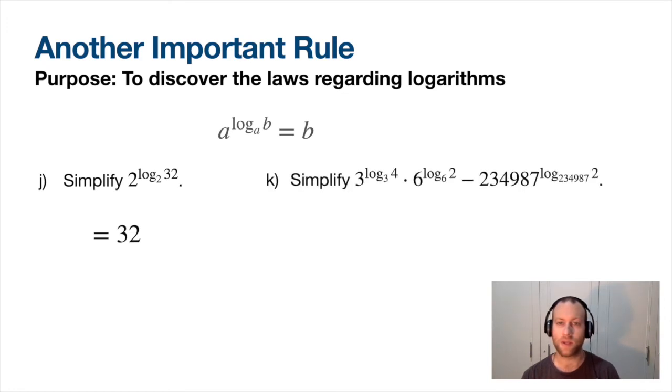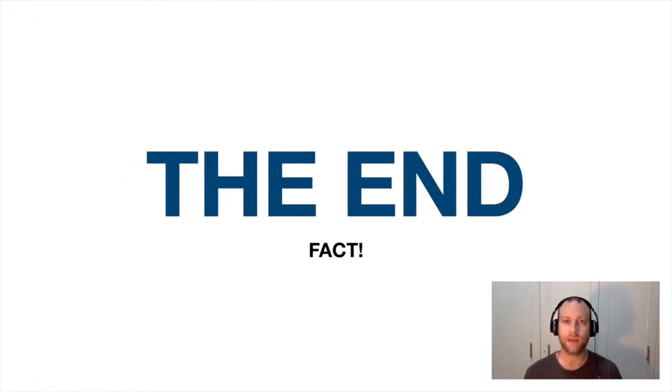But I want to do a crazy one like this. Notice 3 to the power of log base 3 cancel. 6 to the power of log base 6, they cancel. 234,987 to the power of log of base 234,987 cancel. So this just simply equals 4 times 2 minus 2. And for heaven's sake, if you minus the 2s before you multiply, I'm going to be very upset. I feel like if you make that mistake, I might as well just give you a 0 on the whole entire test because you can't bed mass. You should do this, especially easy stuff like that. So anyways, this equals 6. 4 times 2 is 8 minus 2 is 6.